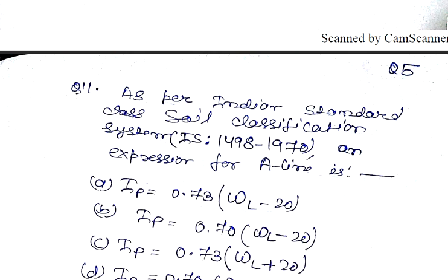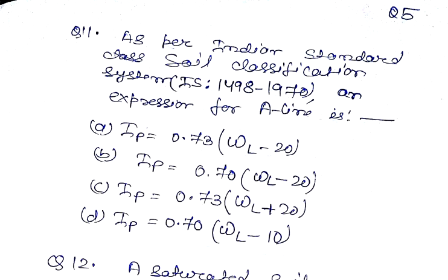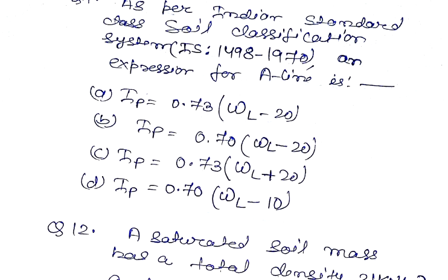Question number 11. As per the Indian standard soil classification system IS 1498 1970, the expression for A line is: IP equal to 0.73 WL minus 20, IP equal to 0.7 WL minus 20, IP equal to 0.73 WL plus 20.